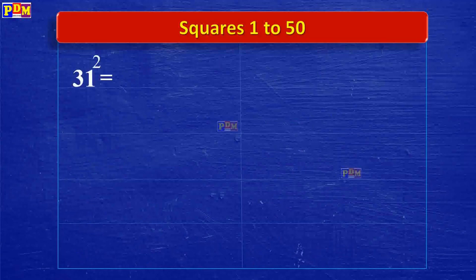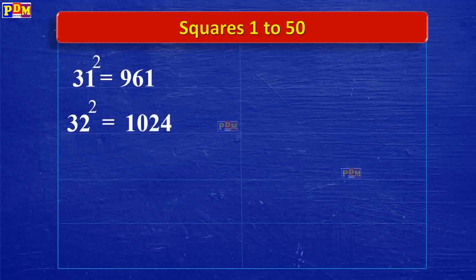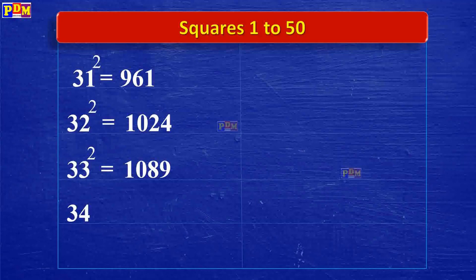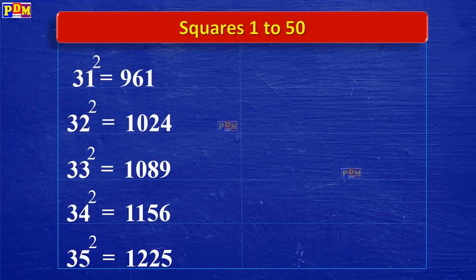32 squared is 1,024. 33 squared is 1,089. 34 squared is 1,156. 35 squared is 1,225.